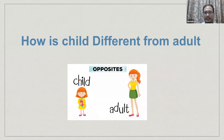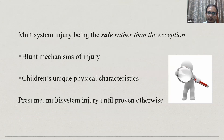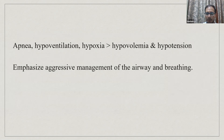How is a child different from any adult? In pediatric patients, multi-system injury is a rule rather than an exception, so always suspect multi-system injury unless proven otherwise. Because of blunt mechanisms of injury and certain physiological and anatomical differences, children differ from adult patients. Apnea, hypoventilation, and hypoxia are more common in children, compared to hypovolemia and hypotension which are more common in adult polytrauma. So we have to be aggressive in airway and breathing management.